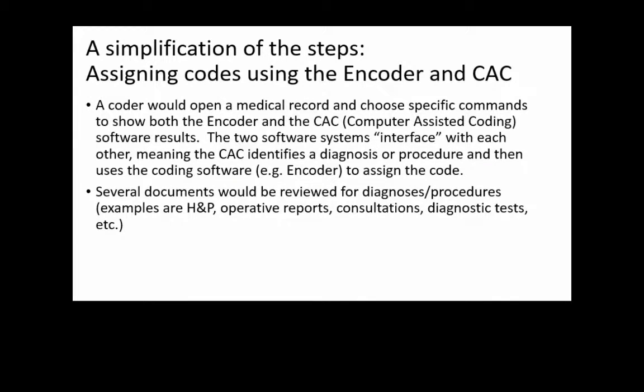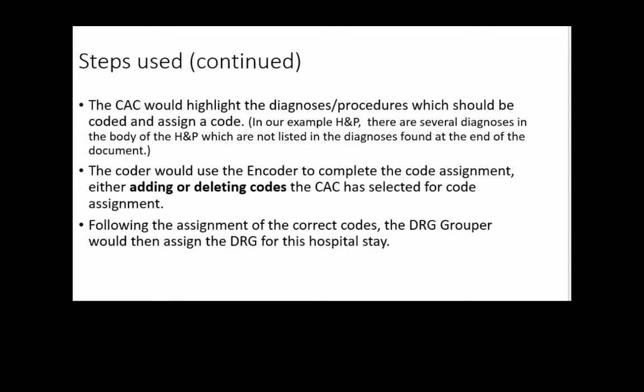I'm going to walk you through how this would work — it's an oversimplification, but it allows you to mentally process how this works in the inpatient hospital environment. The coder would open the medical record on screen and choose specific commands to show both the encoder and the computer-assisted coding software results side by side. Those two systems interface — the CAC identifies a diagnosis and then uses the encoder to assign that code. Several documents would be reviewed for diagnoses and procedures, including H&P, operative reports, consultations, and diagnostic tests.